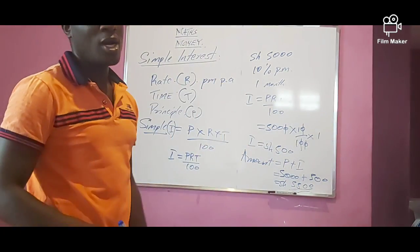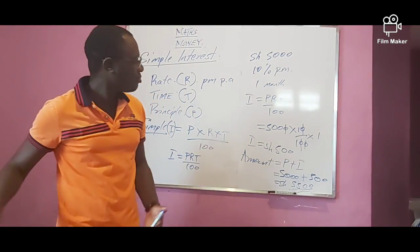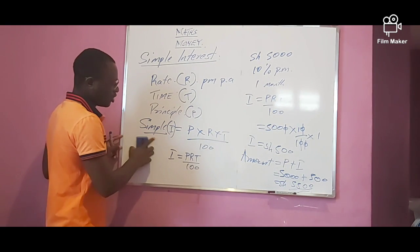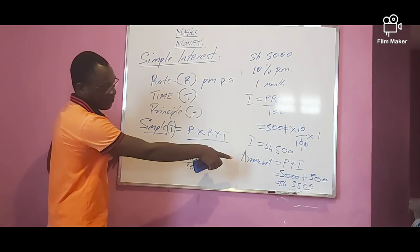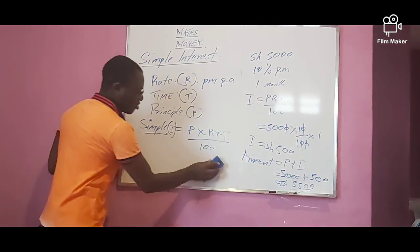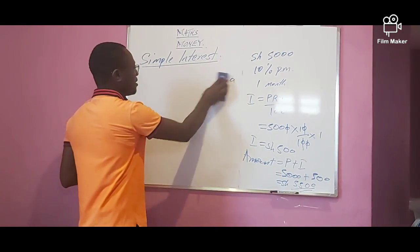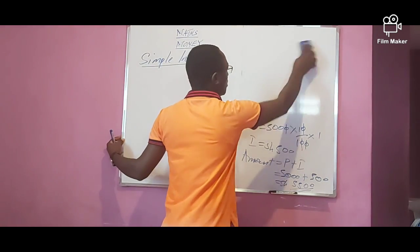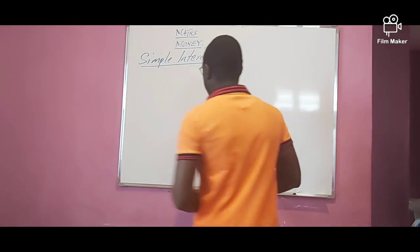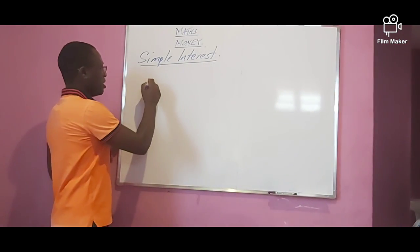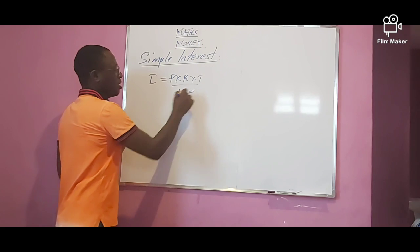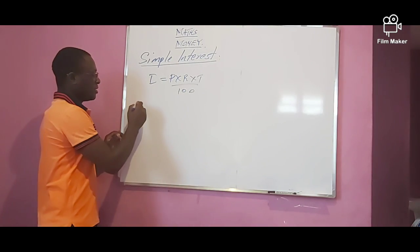This is a simple interest question. There are about three types of questions that may appear under simple interest. Let's look at other questions related to simple interest. Remember, simple interest equals principal times rate times time over 100. One of the questions that may be asked is: what is the time?